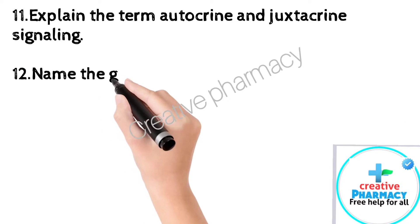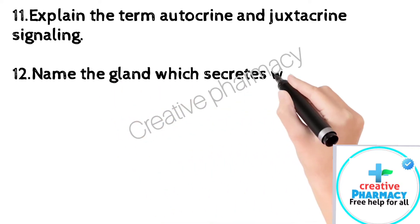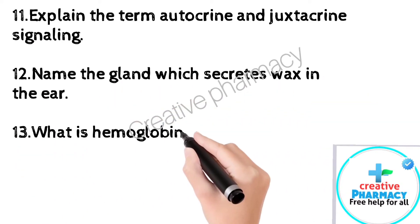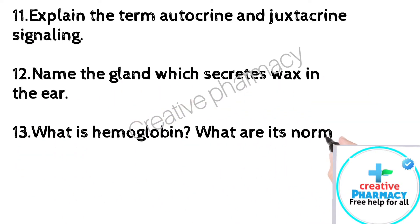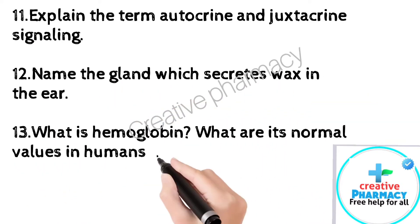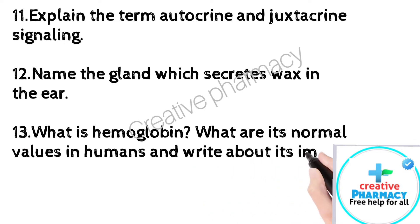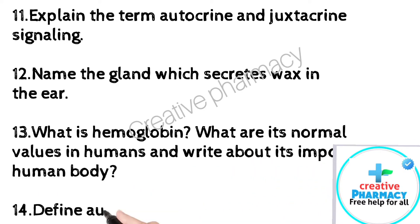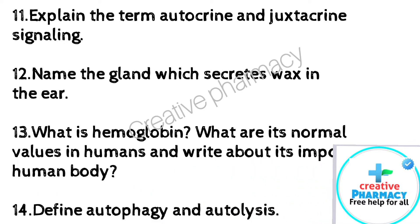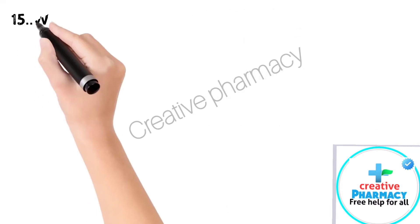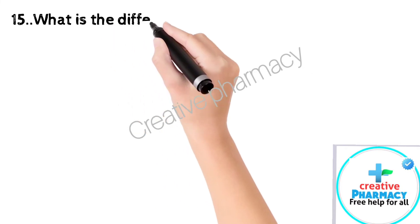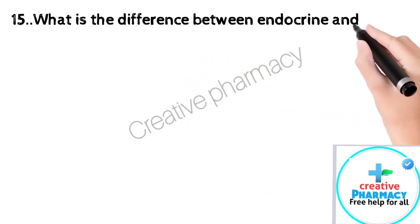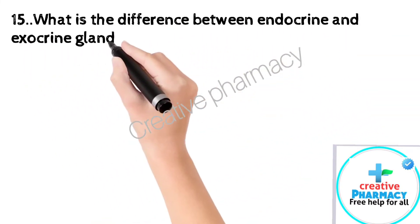12. Name the gland which secretes wax in the ear. 13. What is hemoglobin? What are its normal values in humans, and write about its importance in the human body? 14. Define autophagy and autolysis. 15. What is the difference between endocrine and exocrine gland?